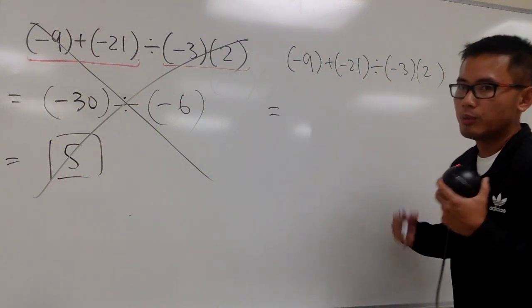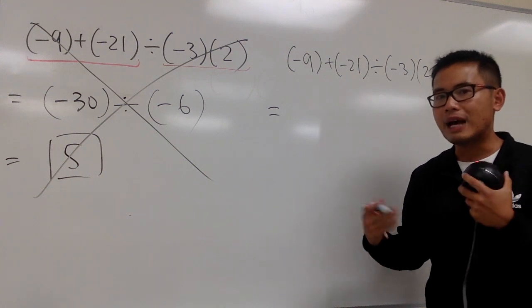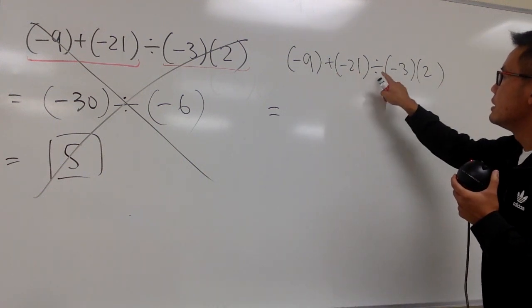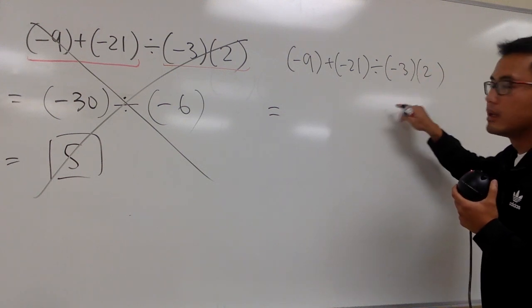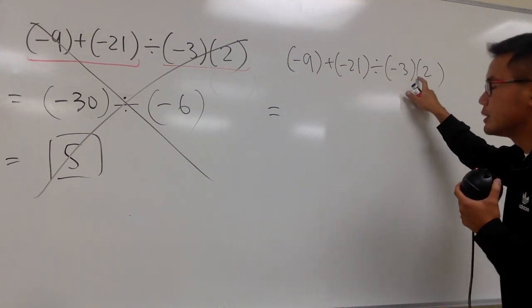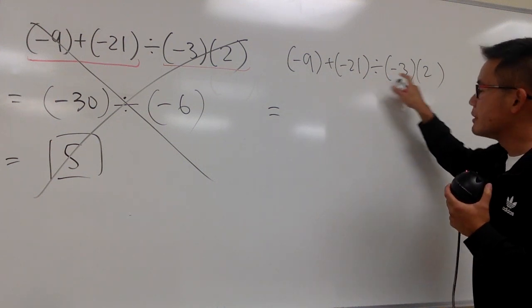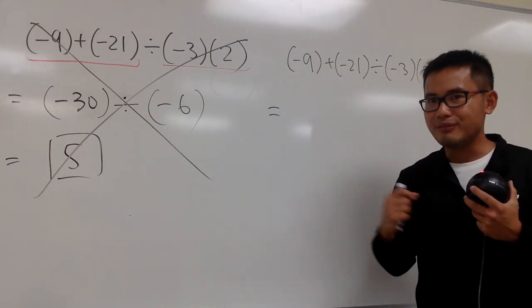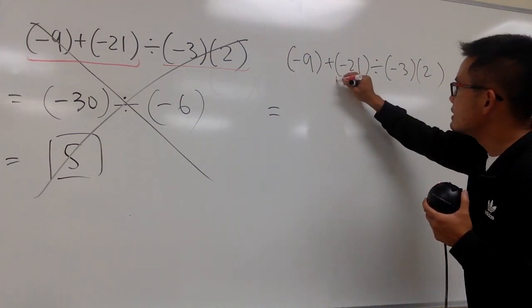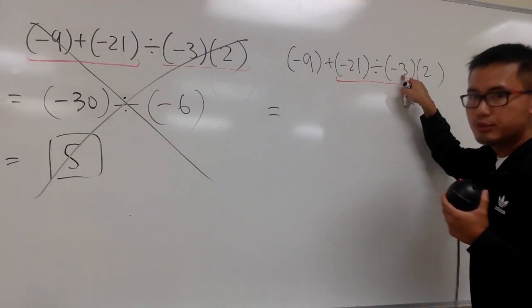So you look for the operation. Remember, you multiply or divide first before you add or subtract. In our case here, we're adding, dividing, multiplying. In this case, we have to look at division and multiplication, and because they happen together, we will just do it from left to right. So in fact, what we have to do first is this. Negative 21 divided by negative 3.